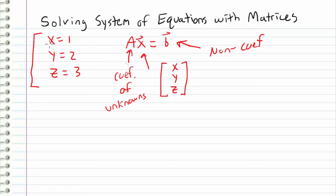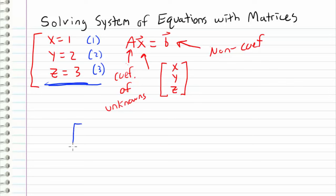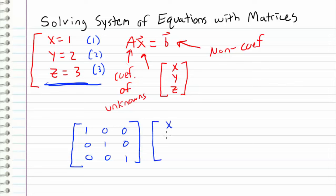Obviously this is a trivial example, but technically we do have three equations: x equals one, y equals two, and z equals three. So if I wanted to organize this system into Ax equals b, I can do that like this — multiplying by x, y, z, and this equals the right-hand side: one, two, and three. Let's verify that this is in fact true.